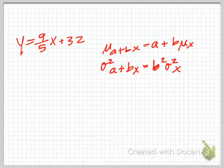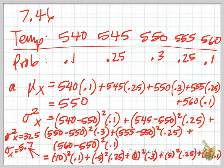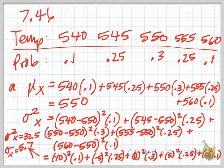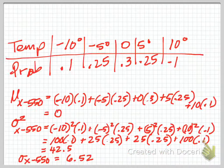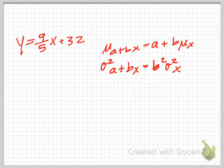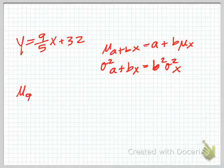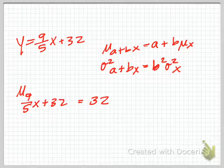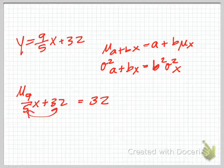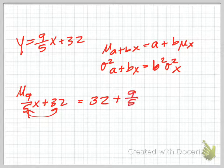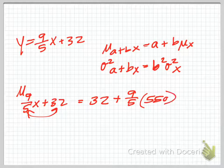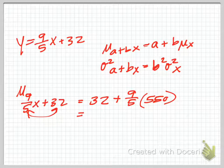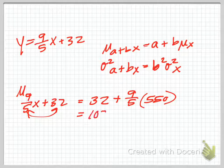So if our mean, let's go back what was our mean? Our mean was 550 like we wanted. Then the mu of 9/5 x plus 32 will be, I wrote that backwards so it would have been switched, 32 plus 9/5 times 550. I'll pause to calculate. I got 1022 on that.